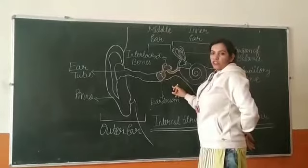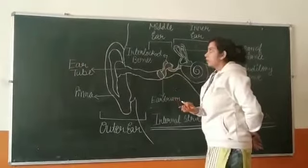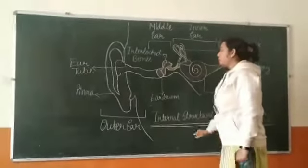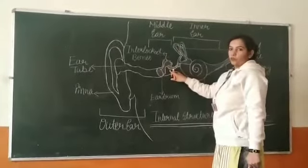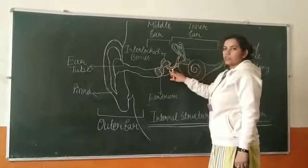The eardrum is a flap-like structure which receives all the vibrations coming from the outer ear. Now the second part is the middle ear. The middle ear mainly consists of three bones: one is malleus, second one is incus, and third one is stapes.